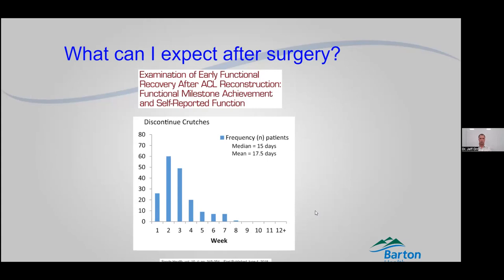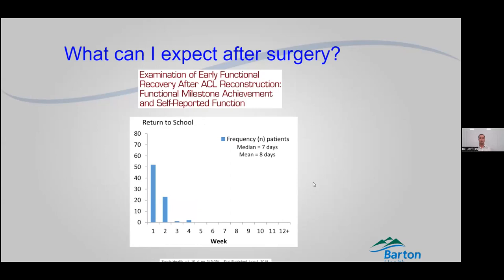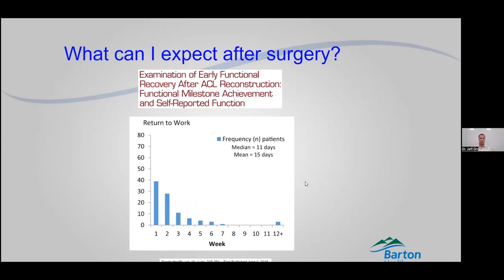Returning to school: you kids can usually get out of school for a week, sometimes two, and after that you can be back in school. Returning to work: same thing — one to two weeks, people are typically back at work, especially if it's a more sedentary job. If it's a more exertional job, you might have to be out a little bit longer, or if you do return to work you'll have more restrictions on what you're allowed to do.